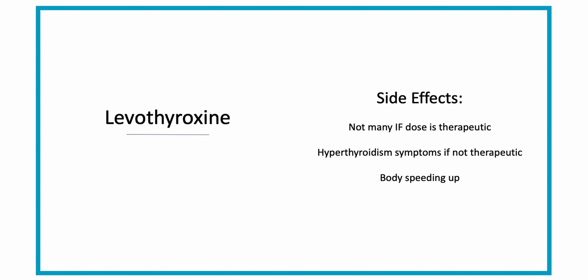There are not many side effects of levothyroxine when the dose is therapeutic, but if the dose is too high, you can see signs and symptoms of hyperthyroidism. Some of these would be tachycardia, cardiac arrhythmias, chest pain, irritability, headache, GI upset, sweating, weight loss, insomnia, and menstrual irregularities. These are all signs of hyperthyroidism.